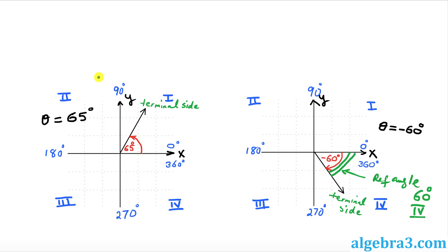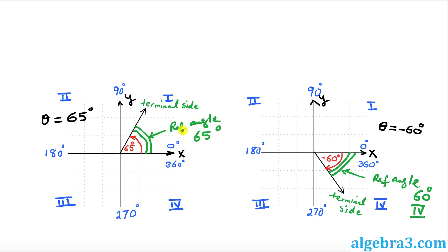Let's look at the left-hand side example. We have angle theta equal to 65 degrees. As you can see, it is counterclockwise. The reference angle is going to be simply the nearest x-axis and the terminal line. So that is going to be this part — that is our reference angle, and it is obviously 65 degrees. And which quadrant? This is going to be in the first quadrant.